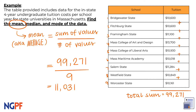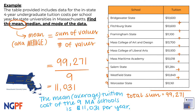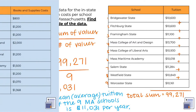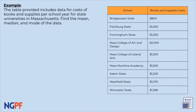This means that the mean, or the average, cost of tuition for these nine state schools in Massachusetts is $11,031. Before we move on to find the median and mode, go ahead and try calculating the mean for this data set, which is the cost of books and supplies for the same nine schools. Pause the video here and practice calculating.